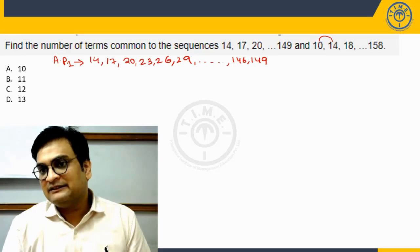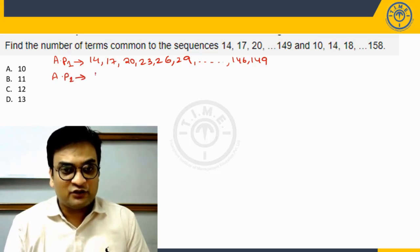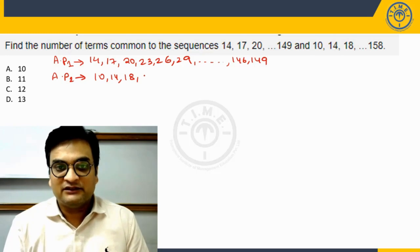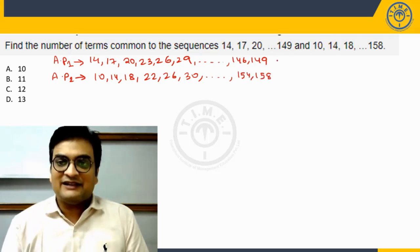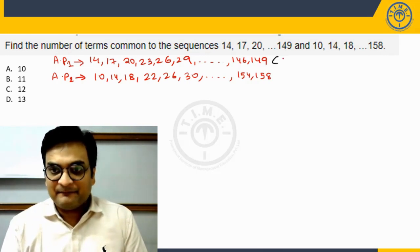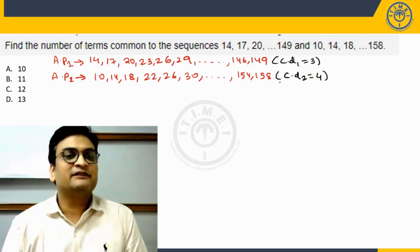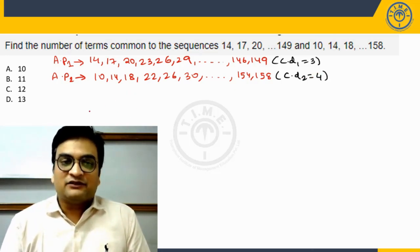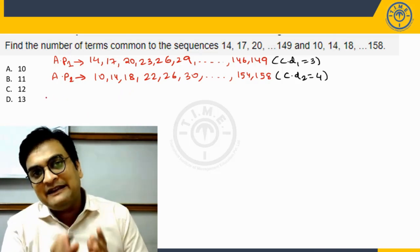Similarly, if you look at the second sequence, the difference is 4 everywhere. So this is also an AP — let us call it AP2: 10, 14, 18, 22, 26, 30, and so on, with 154 and 158 as the last terms. The common difference CD1 is 3 and CD2 is 4. Also notice that the series consisting of terms common to both sequences will be another AP.